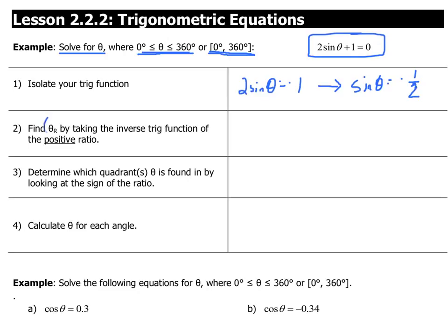We want to find theta R, the reference angle here. To find the reference angle, you're going to use your calculator. If you know that the sine of an angle is one half, or negative one half, then the angle itself is the sine inverse of that value. We're going to do this with the positive ratio, and you're going to have to keep that in mind working with your calculator. You always want to use the positive value. Type that into your calculator, and you'll find the sine inverse of one half is 30 degrees.